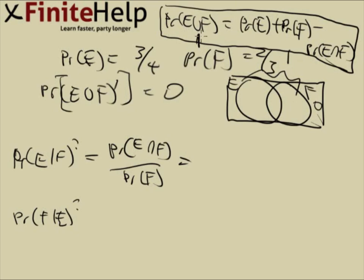And the union is one, E is three-fourths, F is two-thirds. So let's now make a common factor, which is 12. So we have 12/12 equals 9/12 plus this is going to be 8/12 minus E intersect F.